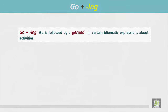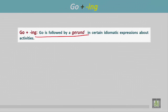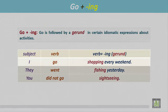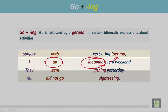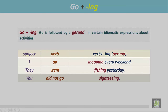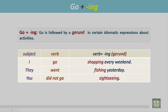Go plus -ing. 'Go' is followed by a gerund in certain idiomatic expressions about activities. See the examples. 'I go shopping every weekend' — this verb is followed by an -ing form acting like a noun, called a gerund. 'They went fishing yesterday' — similarly, this -ing form is called a gerund. 'You didn't go sightseeing' — also an -ing form of a verb, called a gerund.